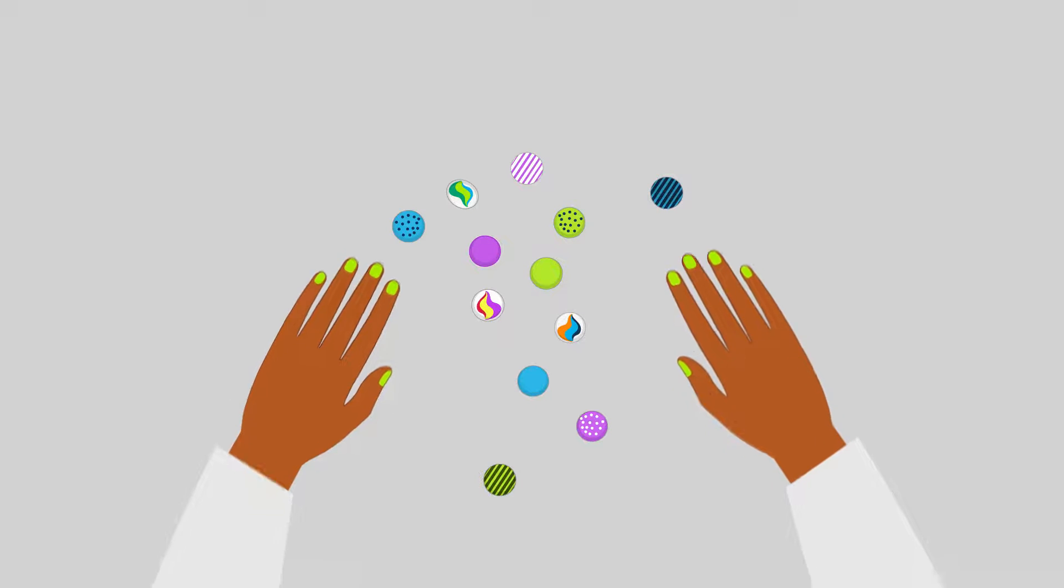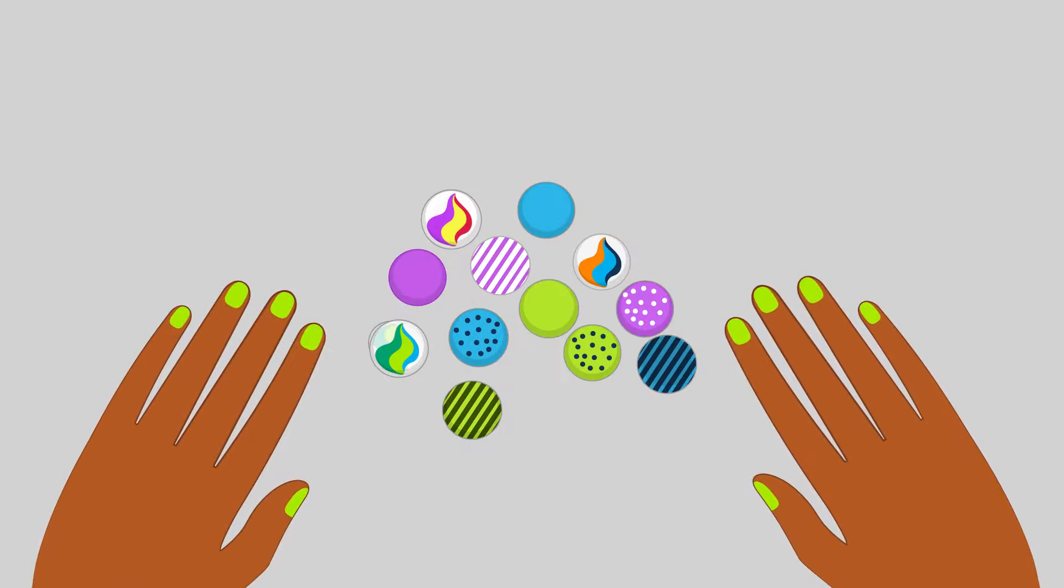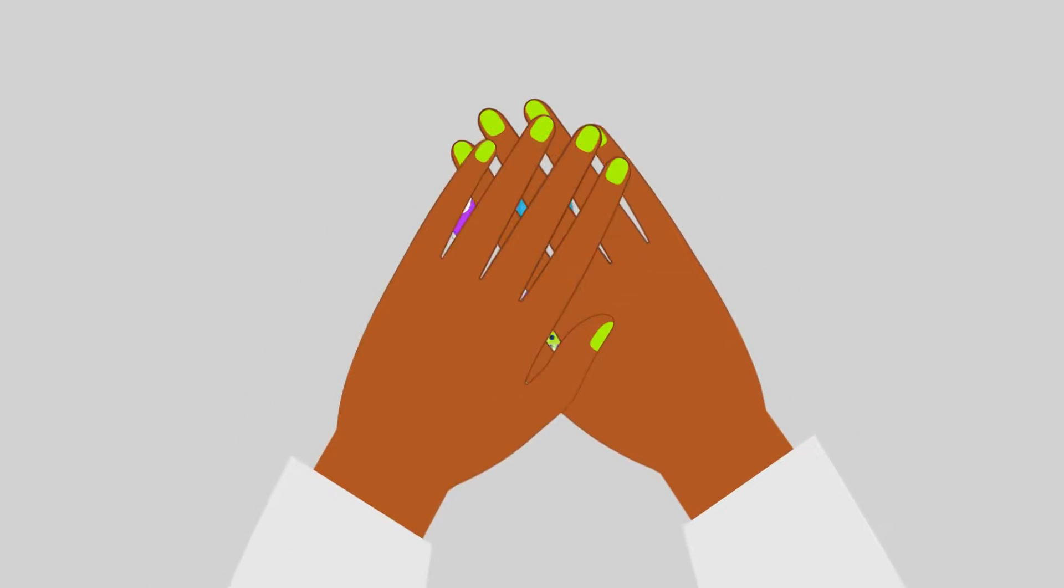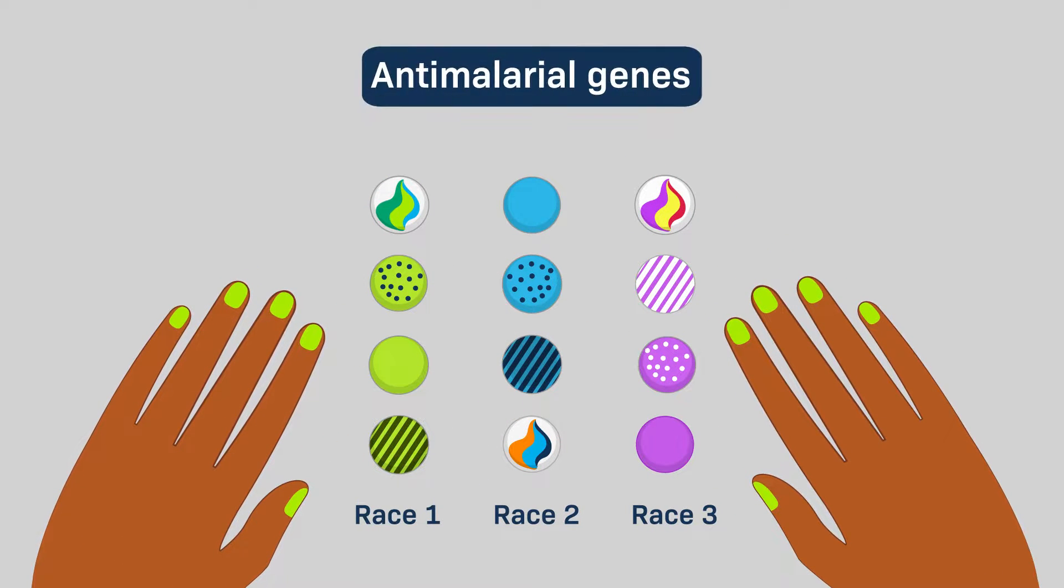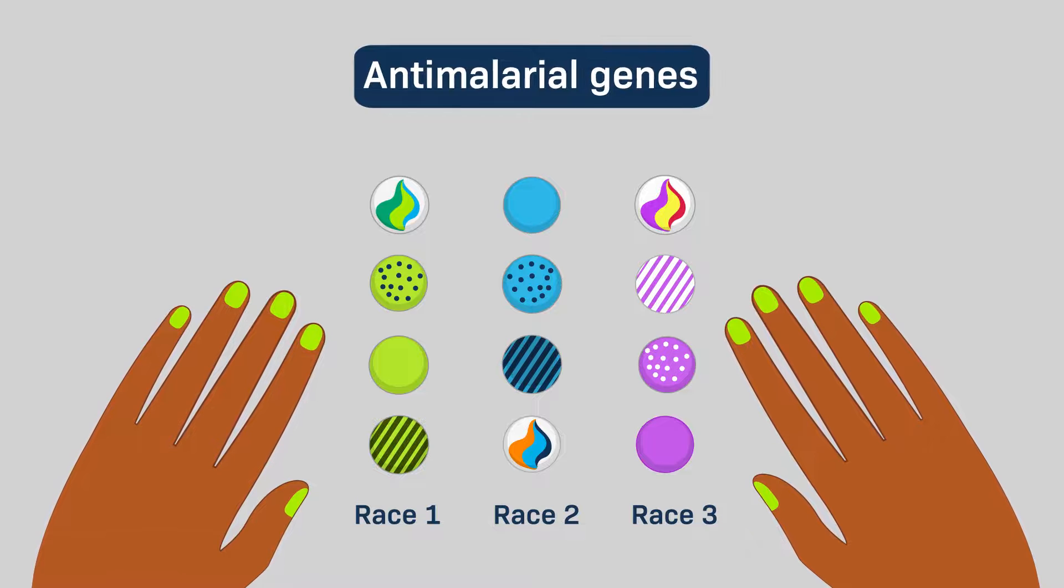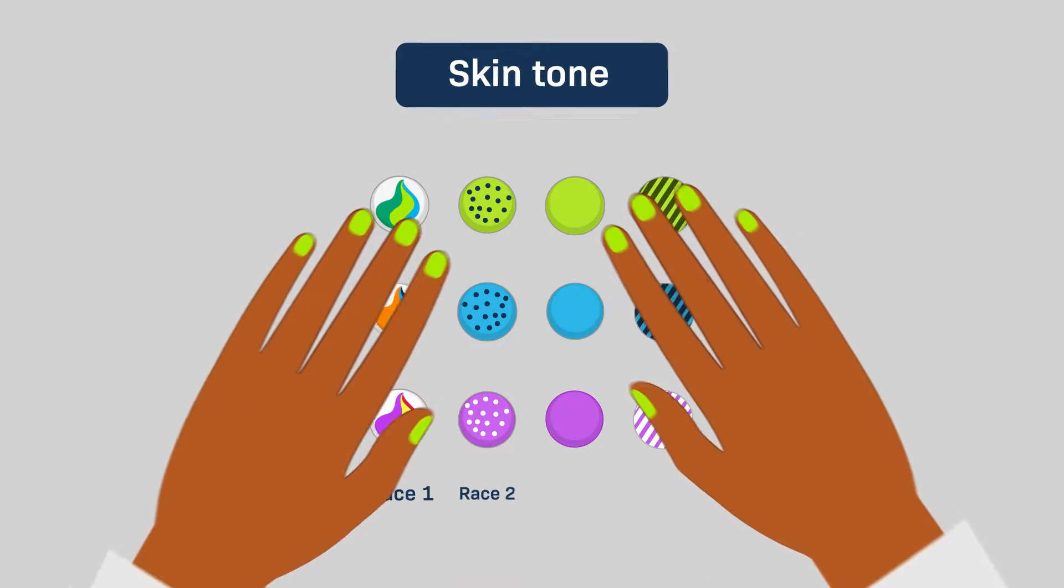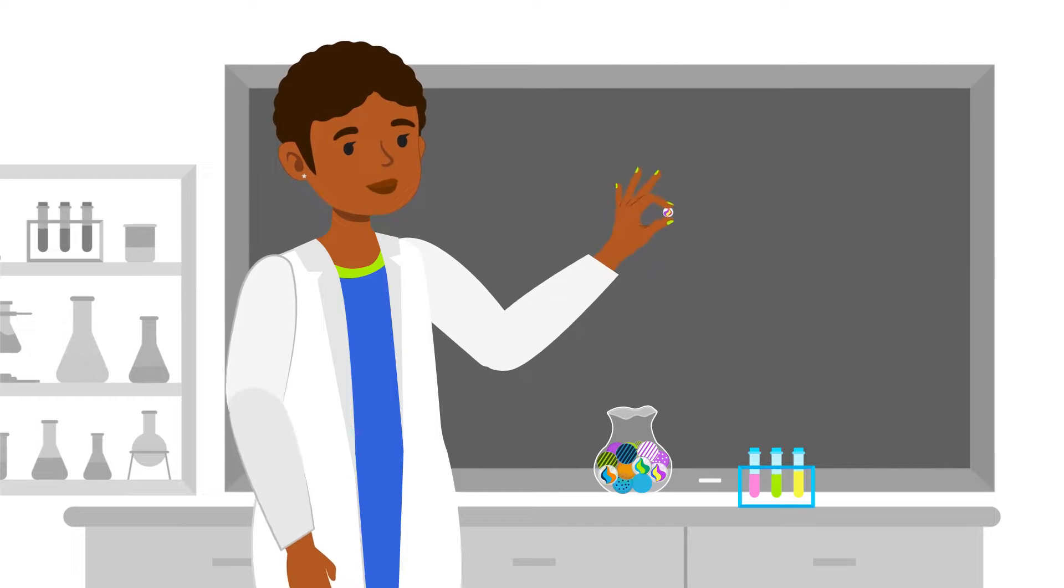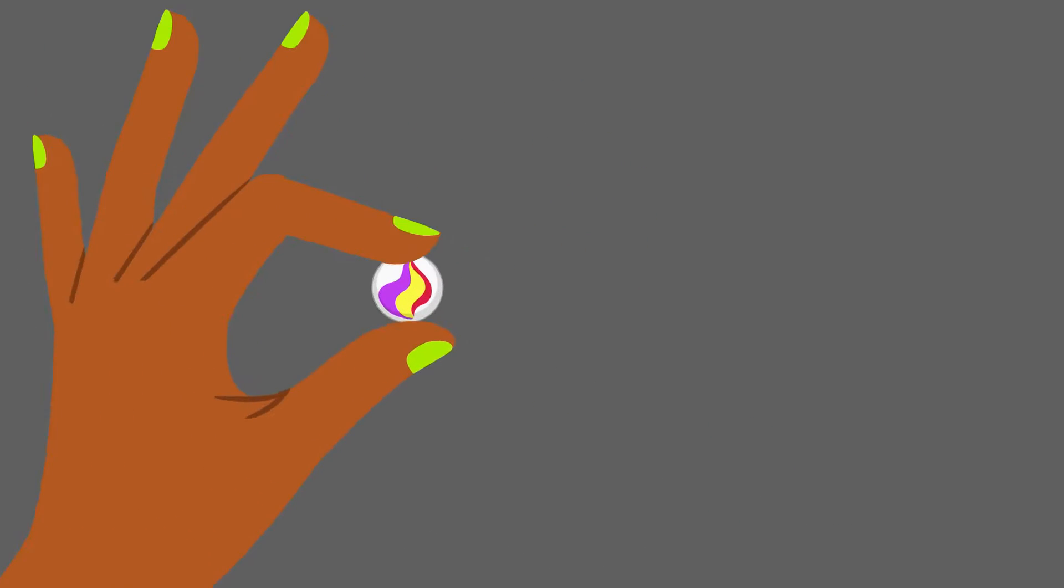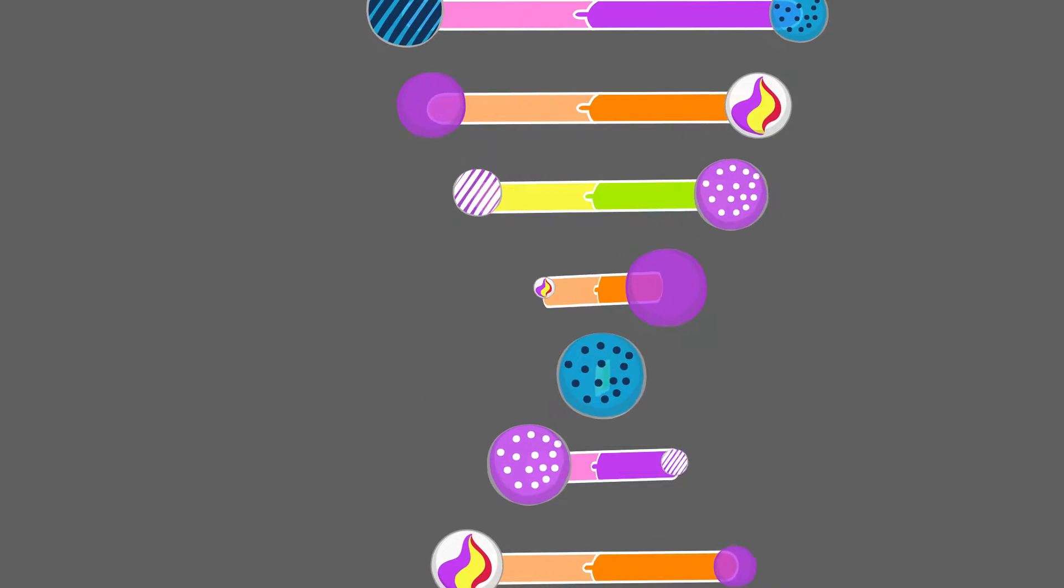We could have classified humans into biological races based on any number of geographically variable traits, such as blood type or anti-malarial genes. If we chose different criteria, our categorizations of racial groups would look completely different. Discordant inheritance shows that there is no bundle of traits that define biological races in humans, because human diversity is much more complicated than that.